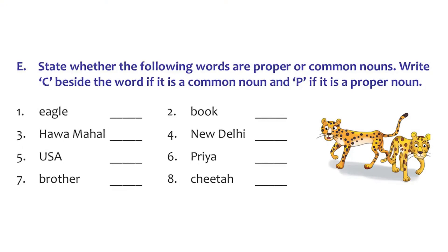Now that you've learned about common nouns and proper nouns, let's look at the activity in the book. Whenever you find a common noun, write C next to the word; whenever you find a proper noun, write P. Eagle is a proper noun because it's the name of a particular bird - write P. Book is a common noun. Hawa Mahal is a proper noun. New Delhi - proper noun. USA - proper noun. Priya is the name of a particular girl - proper noun. Brother - common noun.